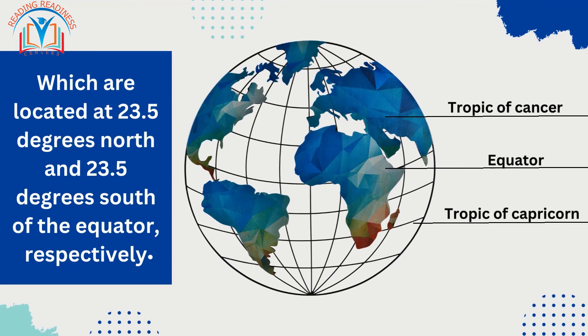Tropical climates are typically found between the Tropic of Cancer and the Tropic of Capricorn, which are located at 23.5 degrees north and 23.5 degrees south of the equator, respectively.